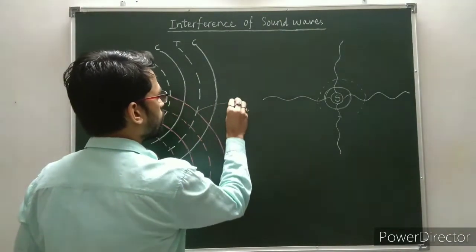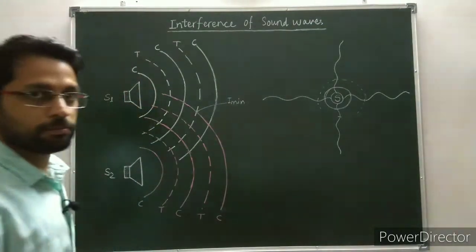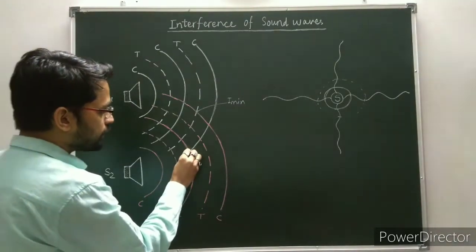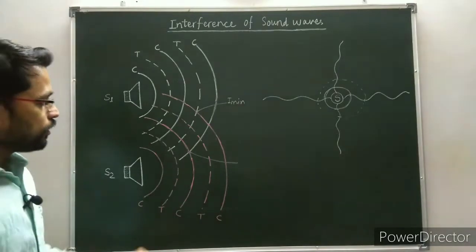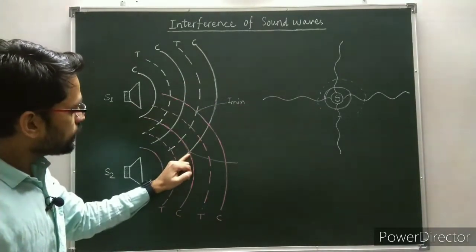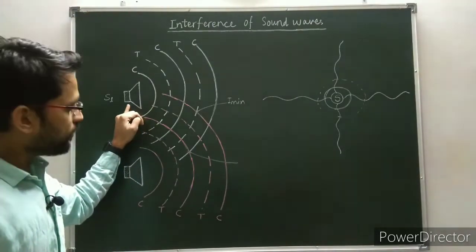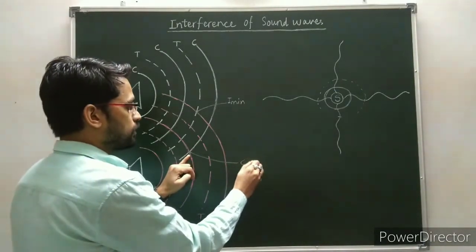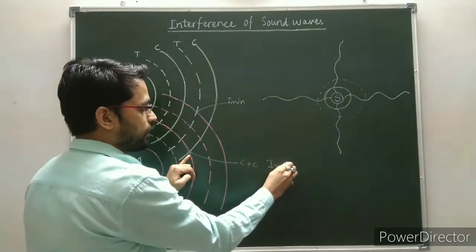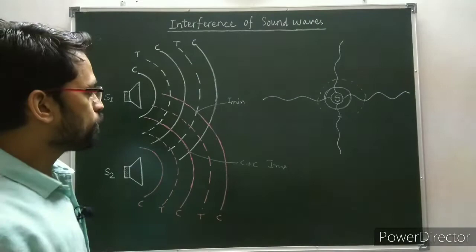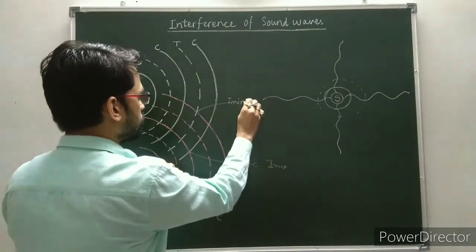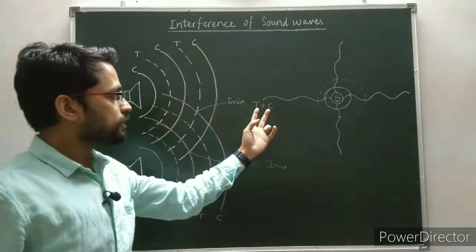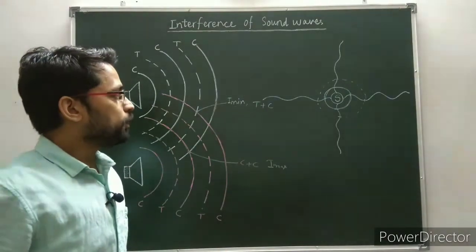This is minimum intensity — I minimum — means destructive interference. And here at this point, we have a crest of the first wave and the crest of the second wave. Crest plus crest means intensity is maximum and we get constructive interference. Here we have trough and crest — trough and crest cancel each other and produce minimum intensity.